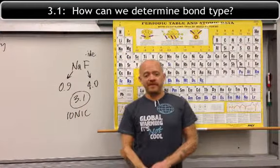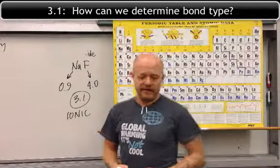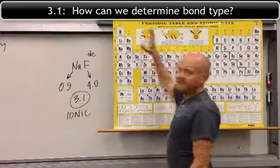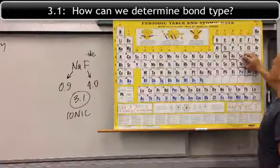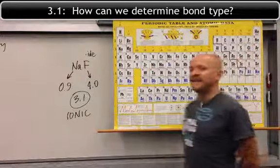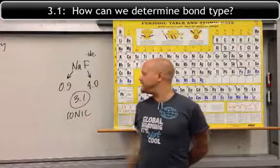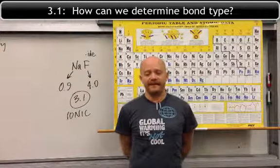Another rule of thumb that you could use is ionic compounds typically include metals and non-metals. That is a good rule of thumb, but you always want to check the difference in electronegativity.